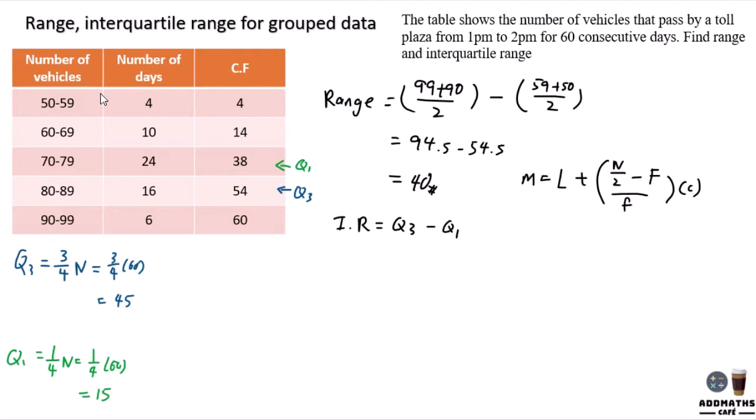First, to find Q3, simply apply the formula. Q3: the lower boundary here is 79.5, plus your 3 over 4 n, which is 45, minus your big F. Big F is the cumulative frequency of the previous class, which is 38, divided by the frequency of Q3, which is 16, times the class, which is 10.